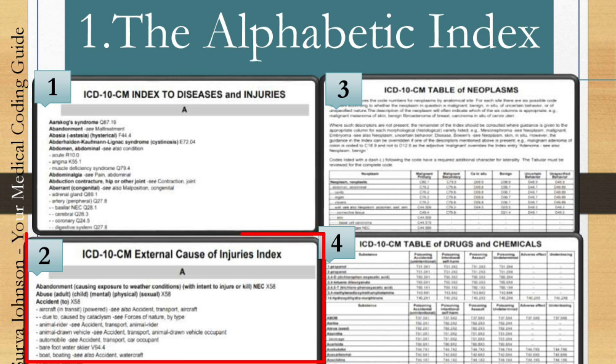The second type is the ICD-10-CM External Cause of Injuries Index. Here you find all external causes. For example, if the patient had an accident and you want to code the accident as an external cause of that injury, you search alphabetically — such as under 'A' for accident, specifying how it happened like through a bus or a car — and find the external cause ICD-10 code.